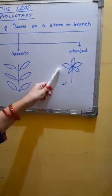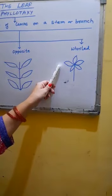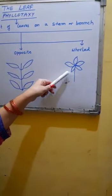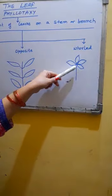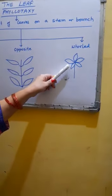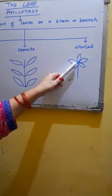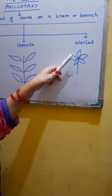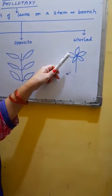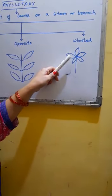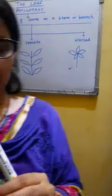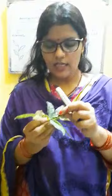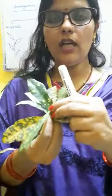The third one is called whorled phyllotaxy, where more than two leaves arise from a common point — from a single node — which forms a whorl-like appearance. It forms a whorl-like appearance around the stem because more than two leaves are arising from one place, covering the stem and forming a whorl of leaves around it.